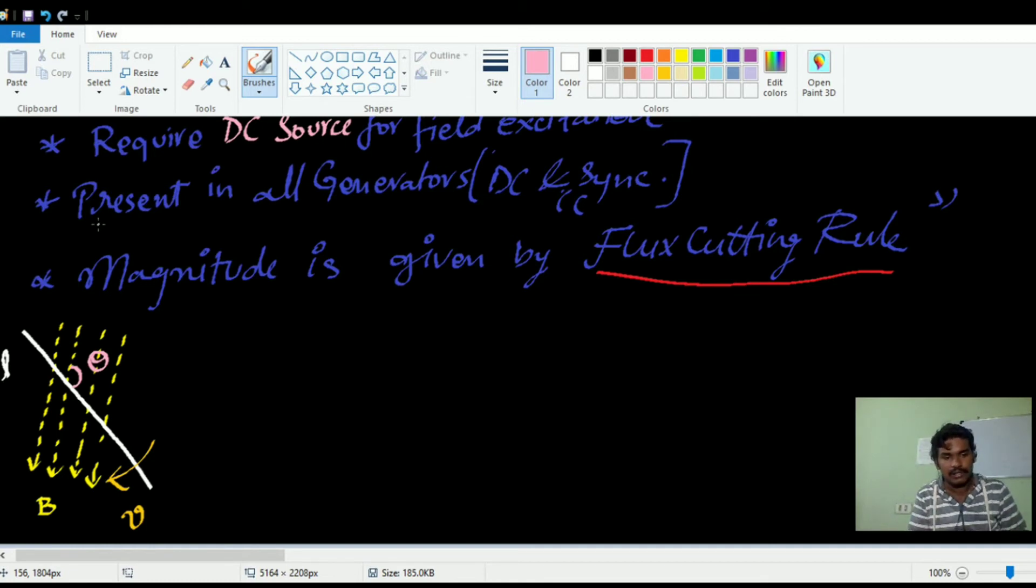That theta is known as the flux cutting angle. Based on these variables, induced EMF E is equal to B into L into V into sin theta.